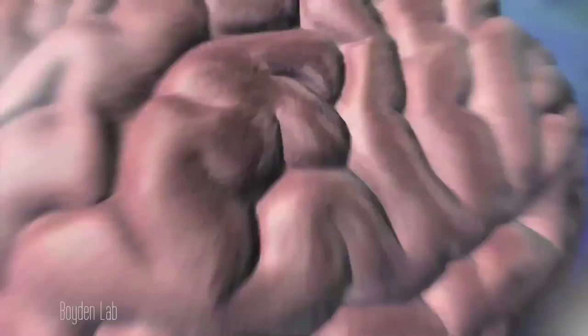That's what we've been working on. How do we control neurons in the brain? Neurons, to first order, compute using electricity. One idea might be to just put a wire in and drive electricity in the brain, right? But there's a problem. Electricity goes everywhere, and so you can't turn on or off just the cells you want to.